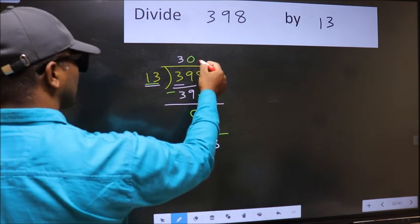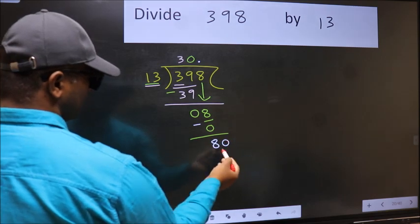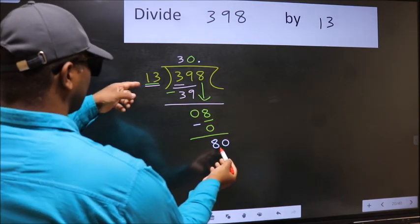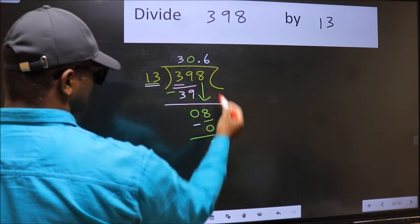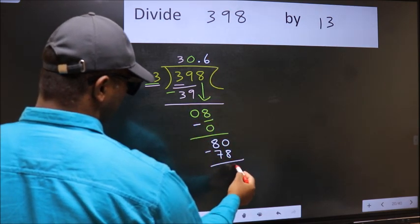So now you can put dot and take 0. So 80. A number close to 80 in 13 table is 13 times 6, 78. Now we should subtract. We get 2.